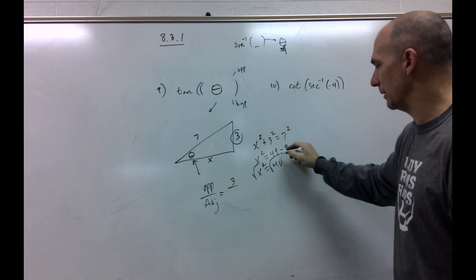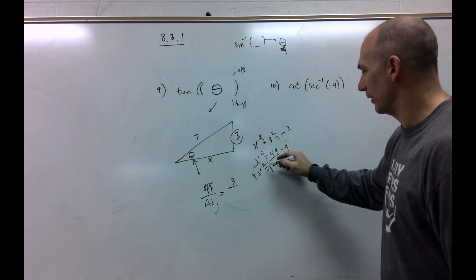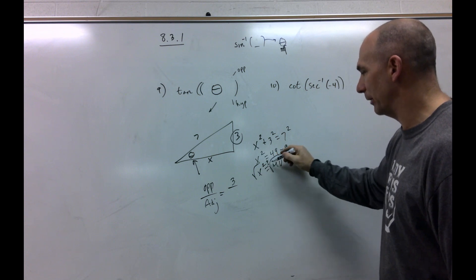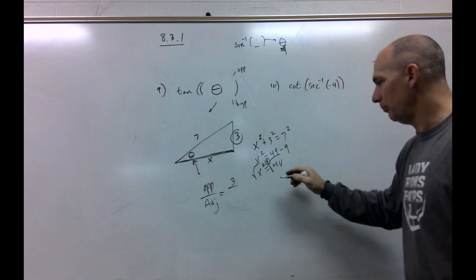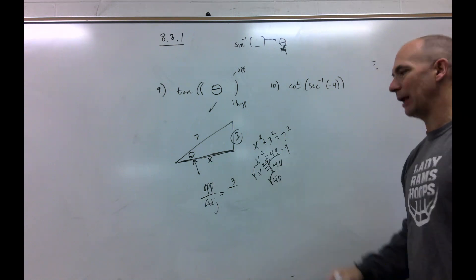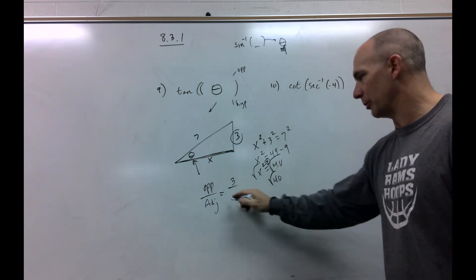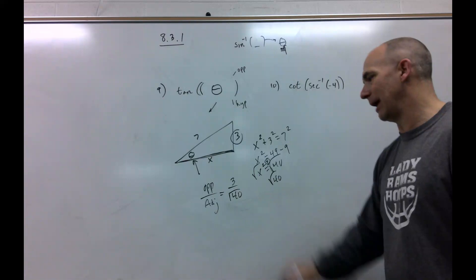Bada boom, bada bing. It's going to be positive because we're finding the length of a side. So, it's the square root of 40. Now, I'm not sure how particular your pre-calc book is going to be, but a lot of times they'll just leave it there.